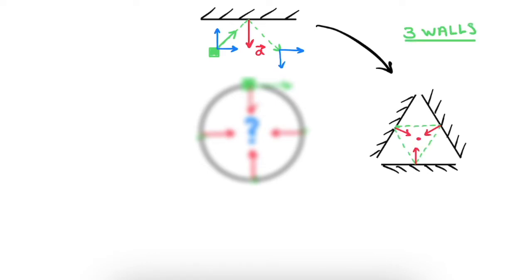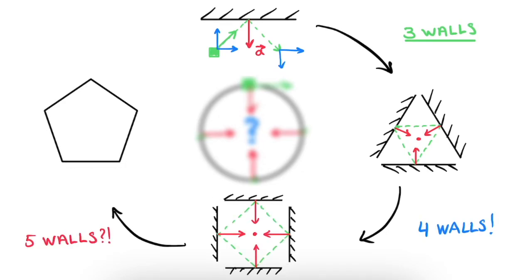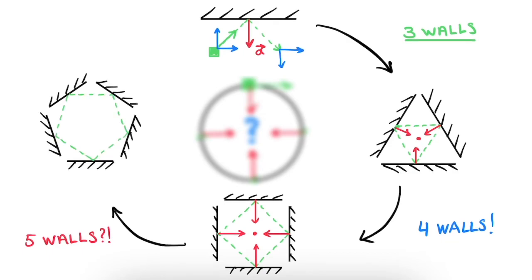When we draw the acceleration vector for each time the object bounces, a pattern emerges. All of these vectors point towards the center of the figure.